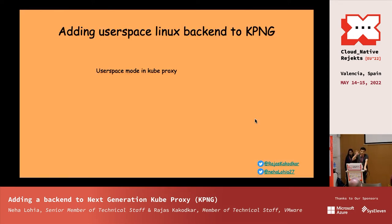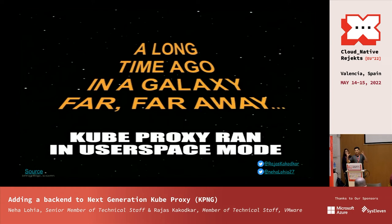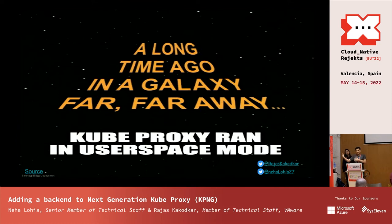Let's focus on the user space mode and how this backend was added in KPNG. This was the first mode added to kube-proxy before moving on to IP tables and IPVS. Even though it's deprecated, it's easier to understand the functioning via user space mode and then move on to IP tables and IPVS — that's why we've taken this example.